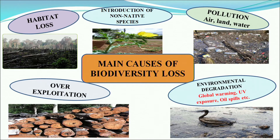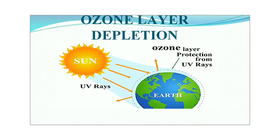Environmental degradation — global warming, UV radiation, and oil spills all affect living species negatively. Over-exploitation: if we catch too many fish and do not let them breed naturally, there will come a time when the entire species goes extinct. Habitat loss — we are clearing forest lands for industrial and residential requirements, and the organisms that originally inhabited them finally enter the extinction list.